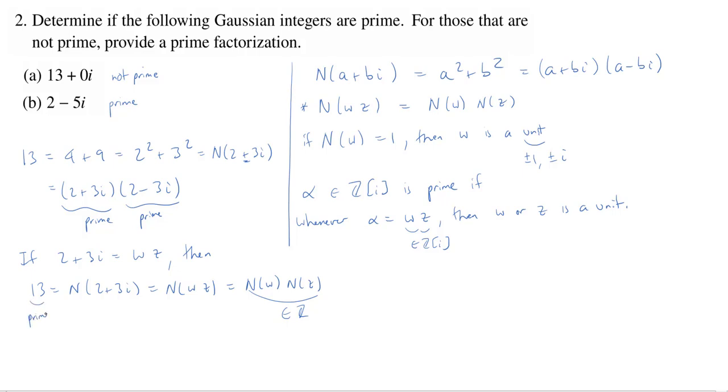And the only way to factor 13 as a product of integers, because 13 is prime in ℤ, we know that this implies that N(w) or N(z) equals 1.